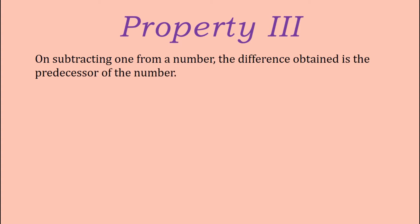The third property of subtraction. According to this property, when we subtract one from a number, the difference obtained is the predecessor of the number, where predecessor means the number just before the given number. Let us understand with an example.